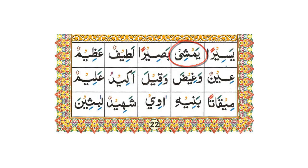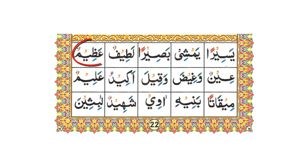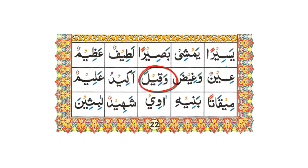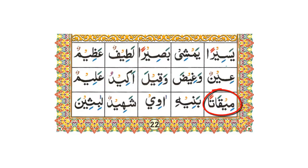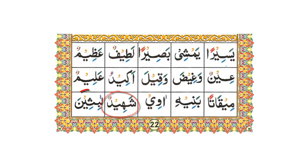Yasiran, yamshi — again, yamshi — there's no example there okay. Basiran, latifun, azimun, aeenun, wadzidwa, waqila, akidu, alimun, miqatan, banihi, awi, shaheedun, labithina.